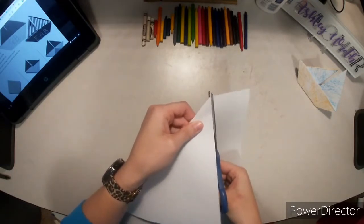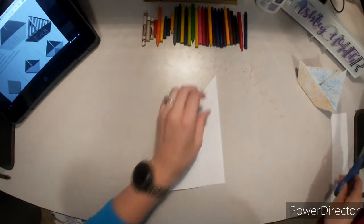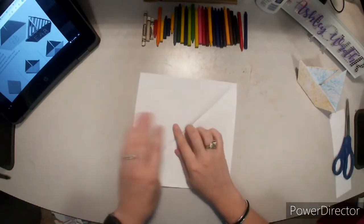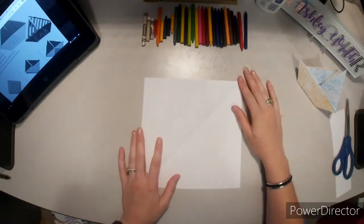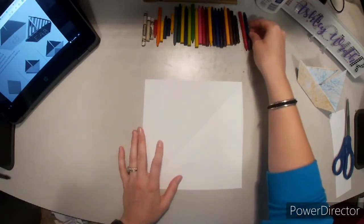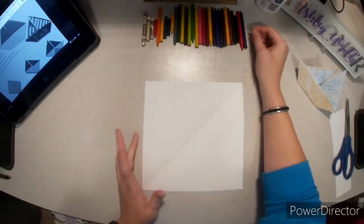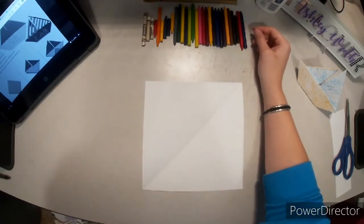There are lots of origami models that look really nice when you have one color on one side and one color on the other side. So what I'm going to do is take these crayons that have had the paper taken off of them and I'm going to color one color on one side, one color on the other side.